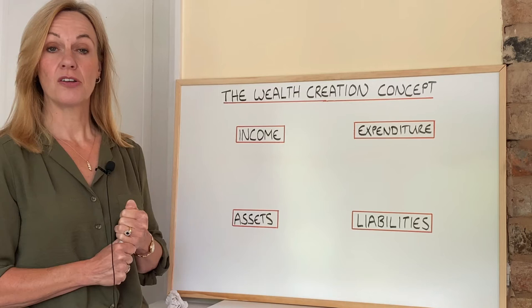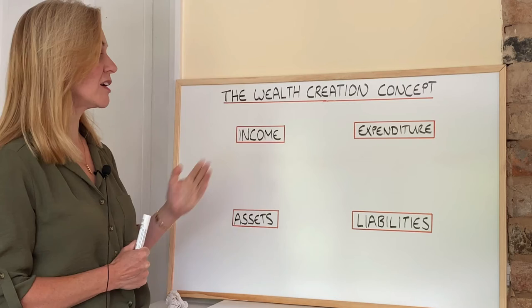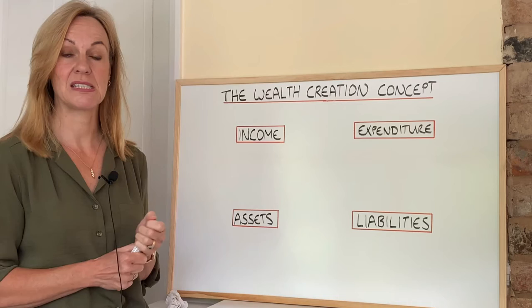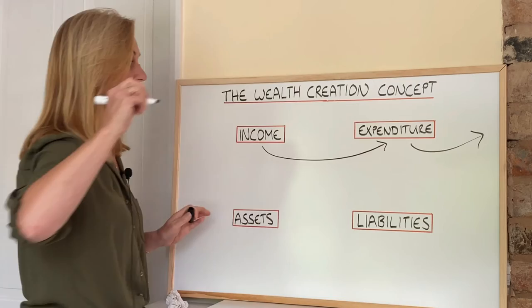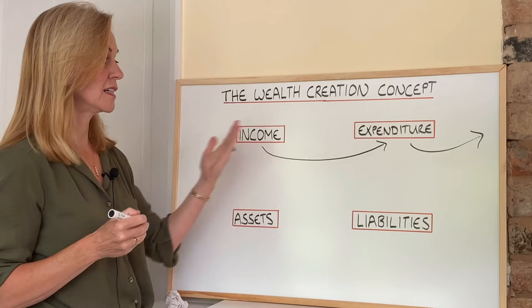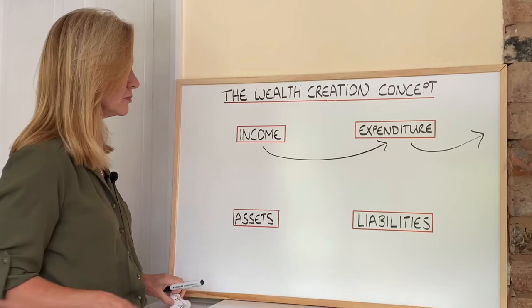Moving on to the wealth creation concept, there are broadly speaking three types of people with regard to how they manage their money. The first type has their income come in each month — and that could be a low or a high level of income; people with six-figure salaries can fall into this category — and they have their expenditure going out each month. Everything that comes in goes out; they don't have any assets, they don't have any liabilities — they literally spend what they earn, year in year out.